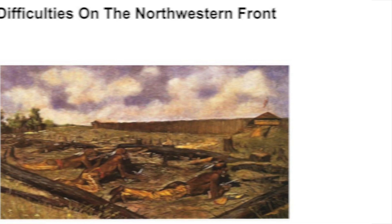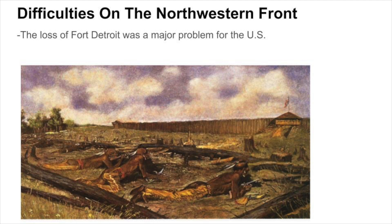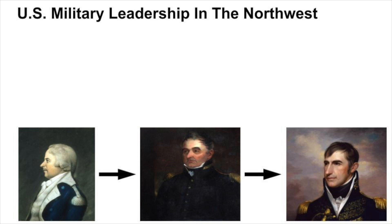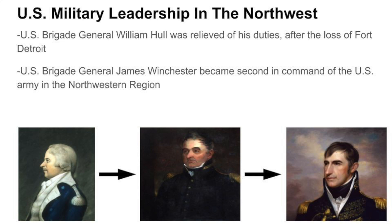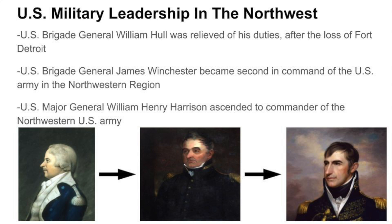The loss of Fort Detroit caused major problems for the U.S. on the Northwestern Front, with many more Native Americans choosing to side with the British. The loss of Fort Detroit also led to Brigadier General William Hull being relieved of his duties. Shortly following this, Brigadier General James Winchester was given command of the U.S. Army in the Northwestern region. Winchester, similar to Hull, did not strategically seek to retake Detroit, and as a result he was quickly demoted to second in command. This led to Major General William Henry Harrison's ascension to commander of the Northwestern U.S. Army.